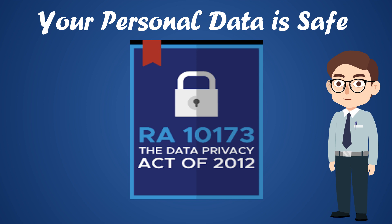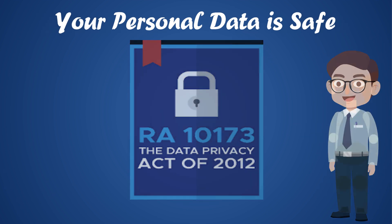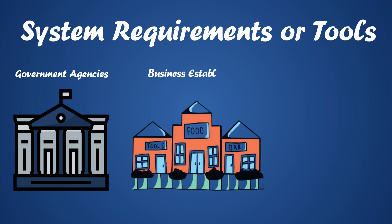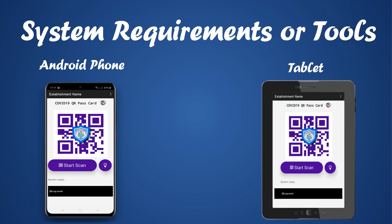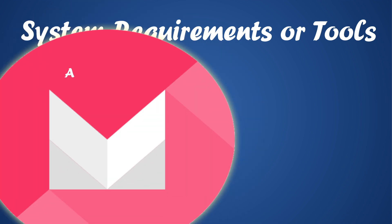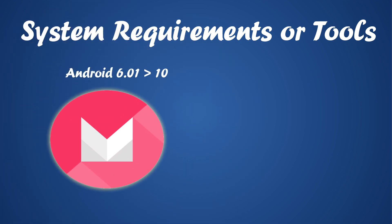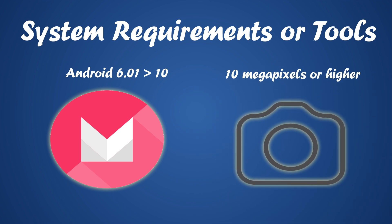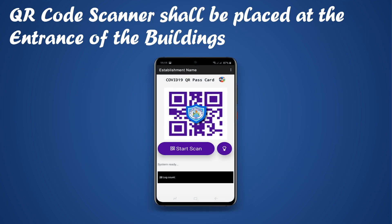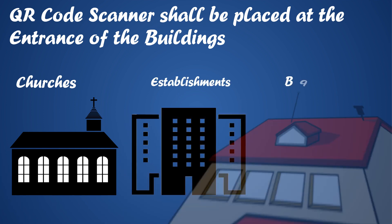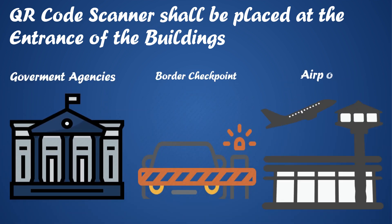The data you have provided will only be used for contact tracing during the COVID-19 pandemic. All government agencies, business establishments, and churches will be required to provide their own QR code reader or Android phone or tablet with unlimited SMS subscription or internet connection. The Android device must be Android Marshmallow version 6.01 or higher, and the camera must be 10 megapixels or higher. An application, only provided by the city, will be installed to that Android phone or tablet, which will be used for scanning the COVID-19 Pass Card. A device reader or QR code scanner shall be placed at the entrance of churches, establishments, barangay halls, government buildings, border checkpoints, airport, seaport, and terminals.